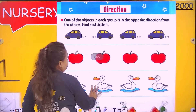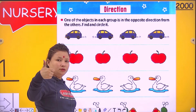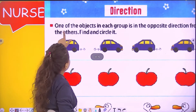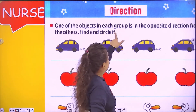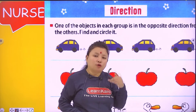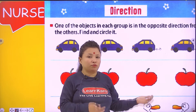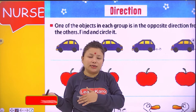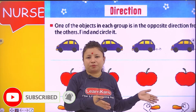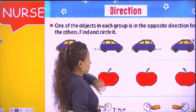So is everybody ready to start? Show me your thumb. So let's start. One of the objects in each group is in the opposite direction. Opposite direction means agar woh left mein jara hai, lekin ek object aisa hai jo right mein jara hai. So we have to find and circle it.